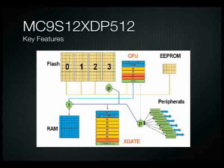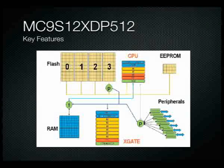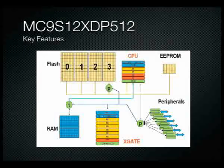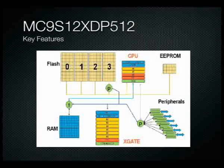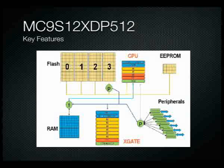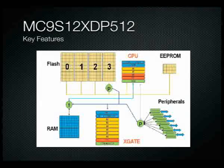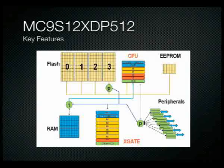Key features of the MC9S12XDP512 processor include the fact that it is effectively a dual-processor system. The primary CPU is the CPU S12, which is the primary processor used in this course. There is also a co-processor — the X-Gate processor — which can implement complex communication protocols or emulate virtual devices not physically present on the chip through bit-bashing. This co-processor offloads work from the main CPU, making the board a dual-processor mechanism.